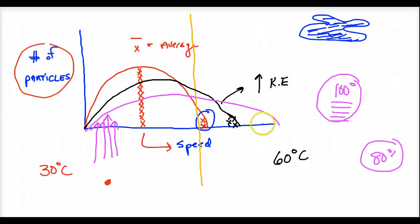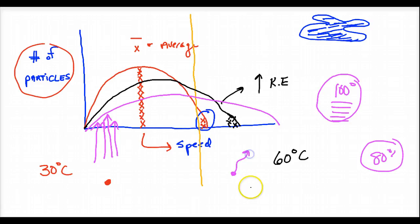Remember, temperature is the average motion — average kinetic energy. We can't use temperature to measure energy directly. Why? Because we don't know all the individual motions. If we knew that every single molecule was going the same speed at every temperature, then we could use temperature to measure energy. But it only gives me an indicator.